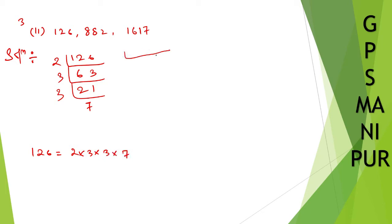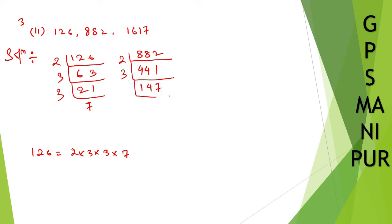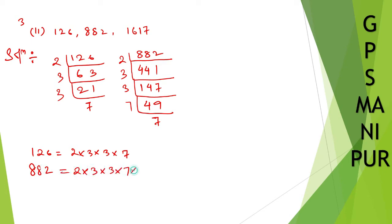Let us find the prime factors for 882. Dividing by 2, then by 3, then by 3 again, then by 7, and then by 7. So we can write 882 = 2 × 3 × 3 × 7 × 7.